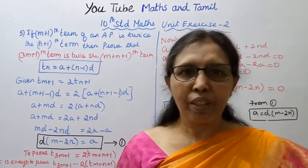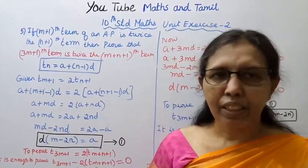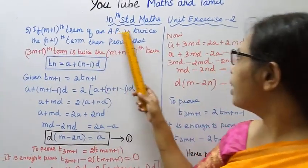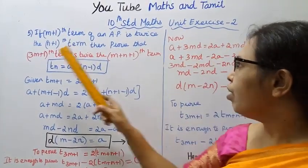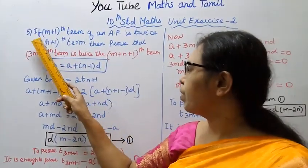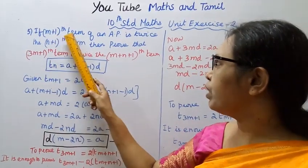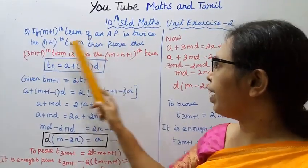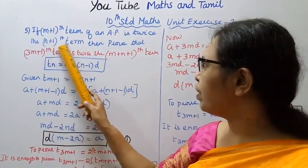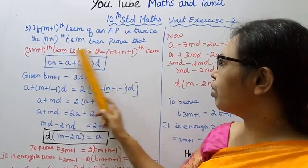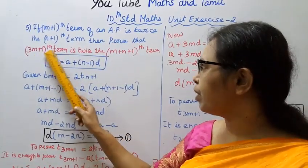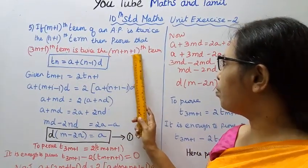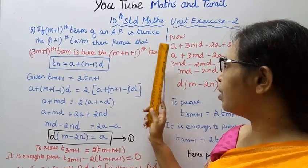Hello students, welcome to Max and Tamil channel. 10th standard Maths unit exercise 2, 5th sum. If the M plus 1th term of an AP is twice the N plus 1th term, then prove that the 3M plus 1th term is twice the M plus N plus 1th term.